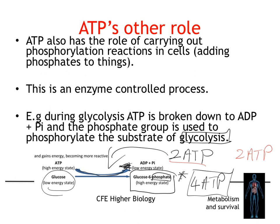ATP phosphorylates other molecules, and that phosphorylation process — that adding of the phosphate group — can result in a pathway being cascaded or a pathway being followed. You don't need to know an awful lot of detail about anything else regarding phosphorylation — just this concept. And that is the end of this very short ATP video.